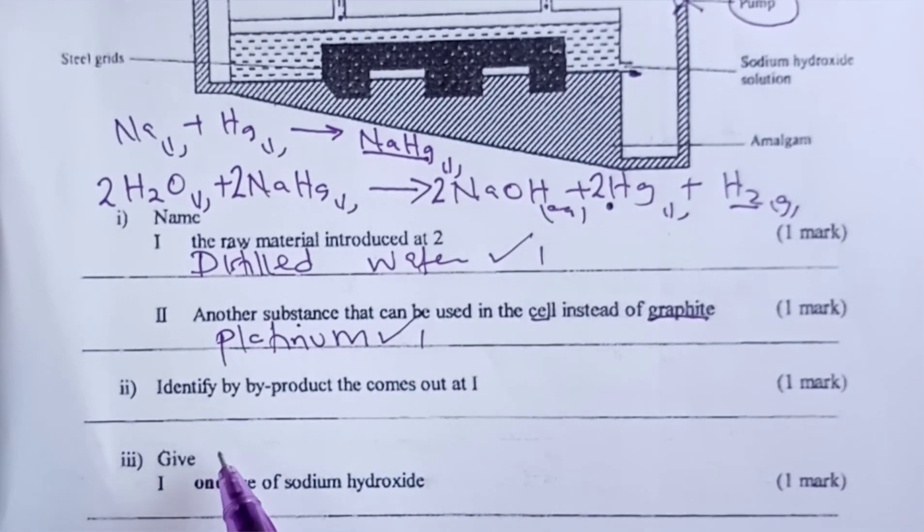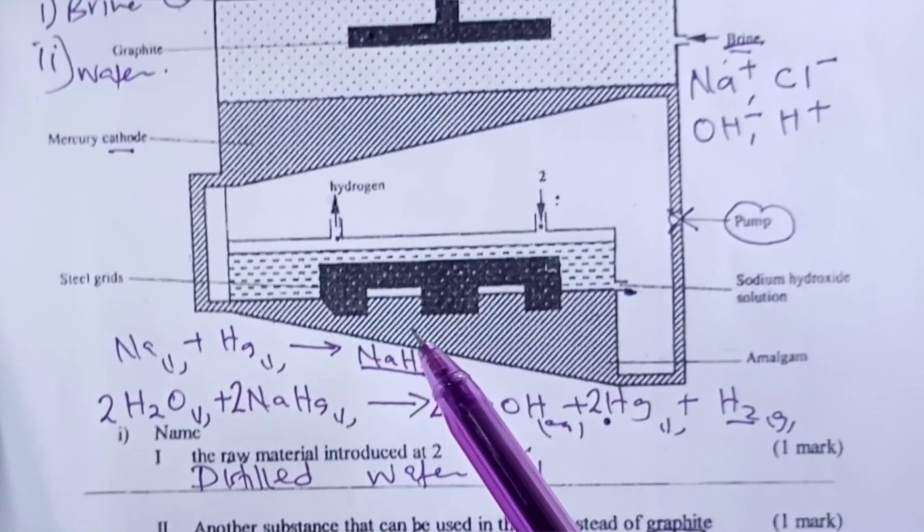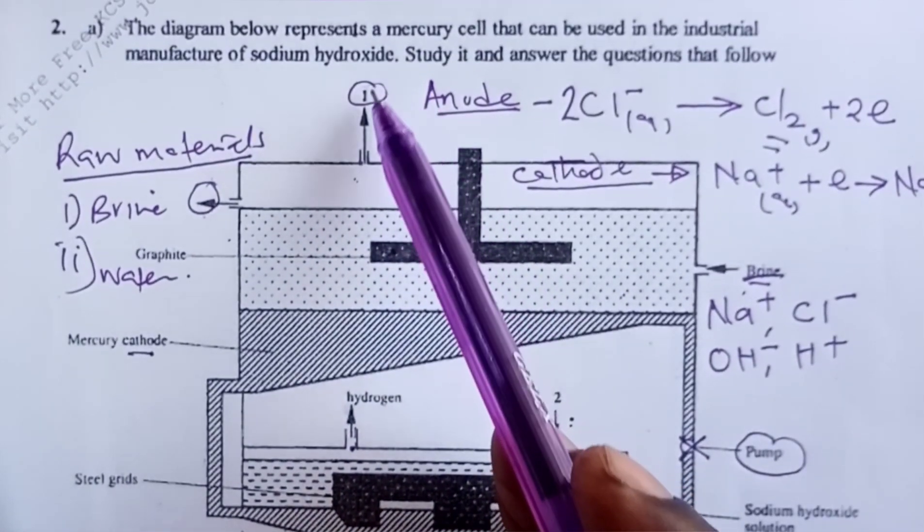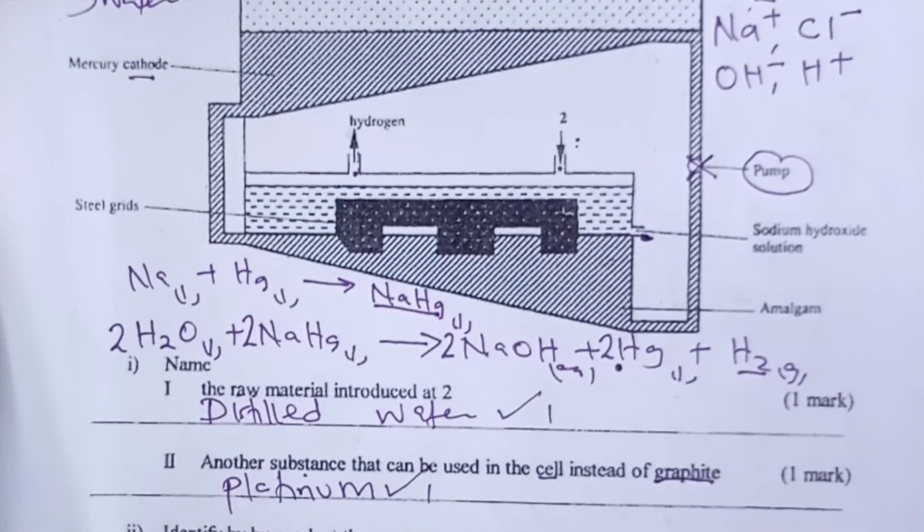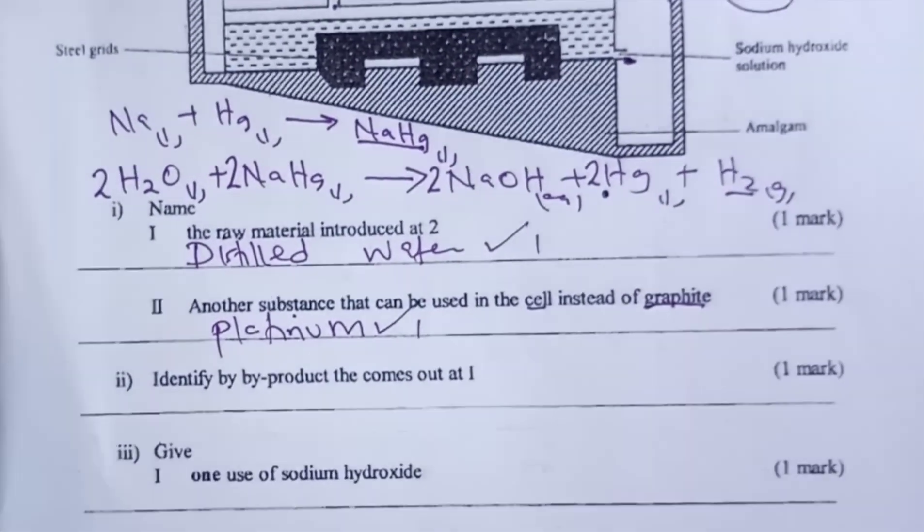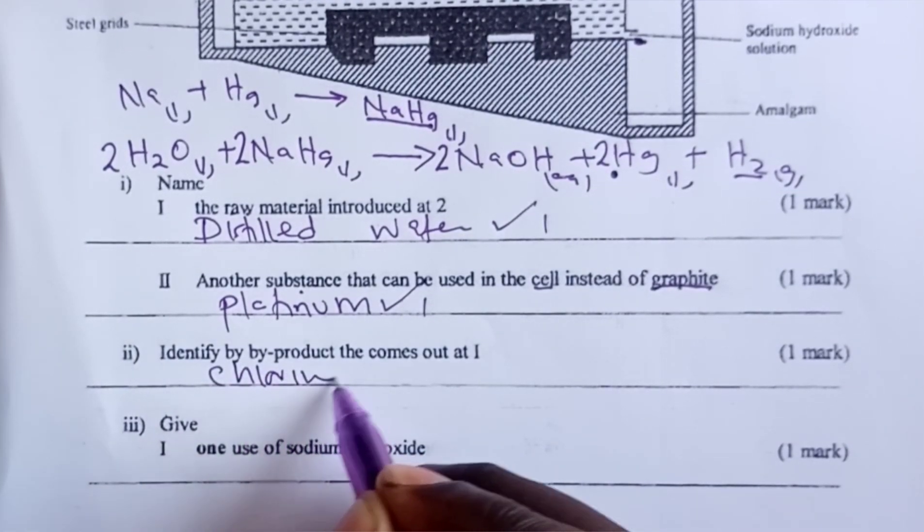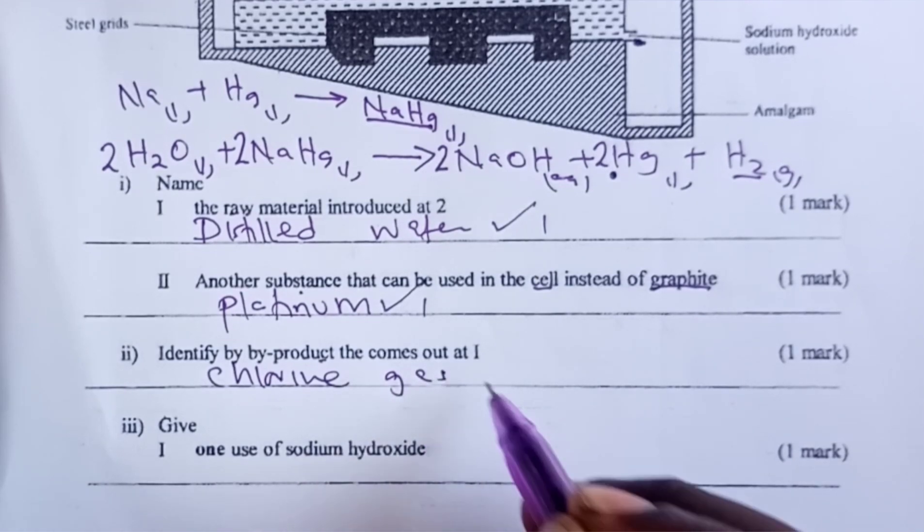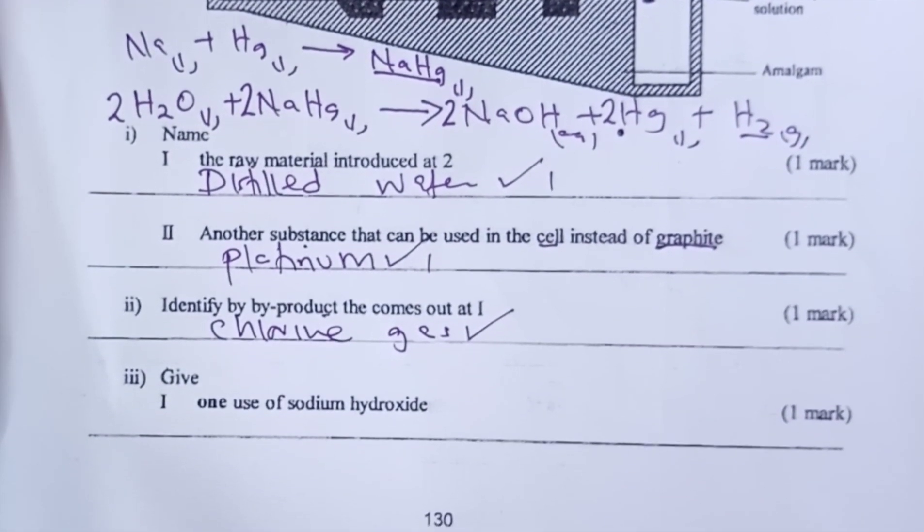Roman two: identify the byproduct that comes out at one. One is up here, and we have agreed that through opening one, this is where chlorine gas comes out through. So chlorine gas was the expected answer for another one mark.